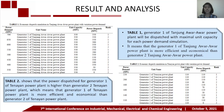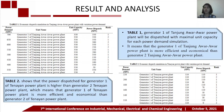This slide shows the economic dispatch simulation in Tanjung Awar-Awar power plant with variation in power demand. Table 1 shows that generator 1 of Tanjung Awar-Awar power plant will be dispatched with maximum unit capacity for each power demand simulation, meaning that generator 1 is more efficient and economical than generator 2 of Tanjung Awar-Awar power plant.